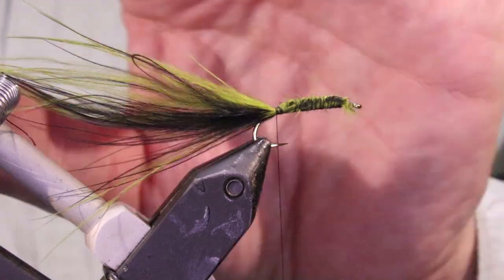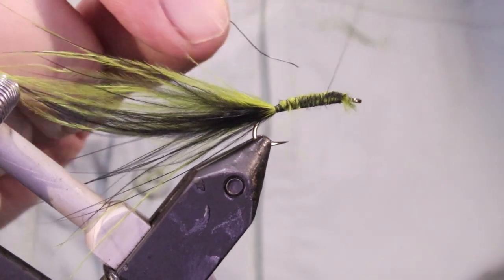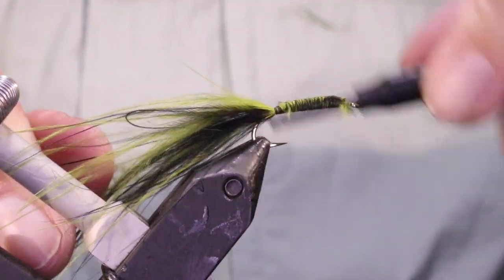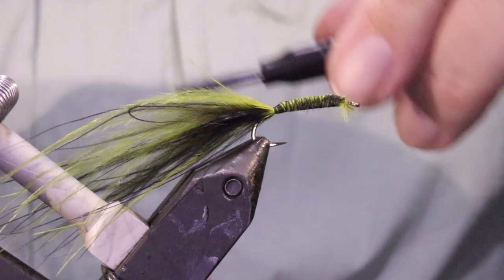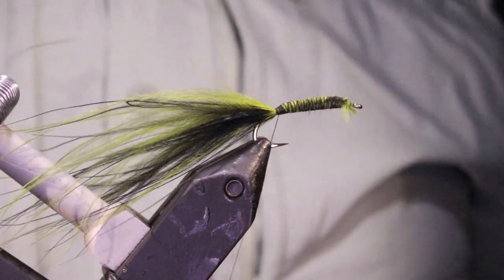Trim away the waste, now tie in my rib, which is just black wire. This is just really for protection, it's not decorative or really adding to the pattern or anything.